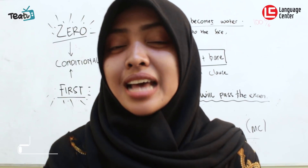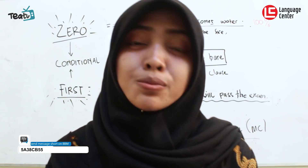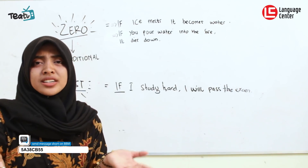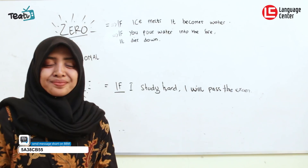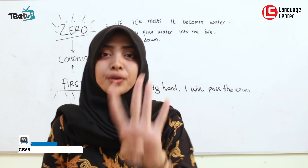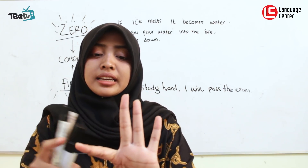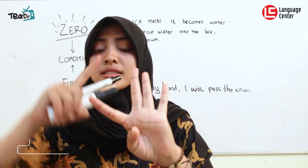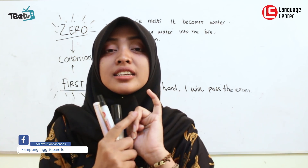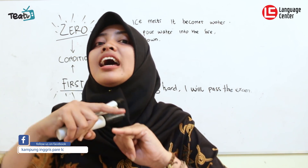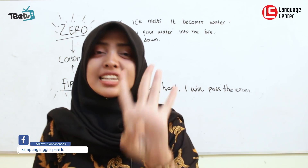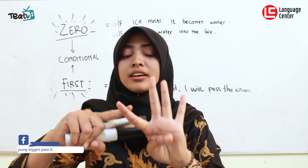Nowadays I'm going to explain about conditional sentences. How many kinds of conditional sentences? The kinds of conditional sentences are 4: from the zero conditional, the first conditional, the second conditional, and the third conditional. So there are 4.